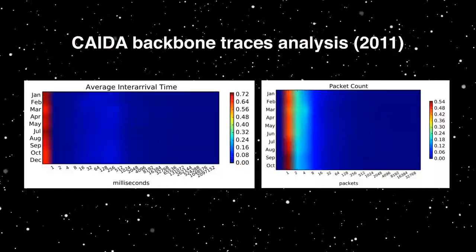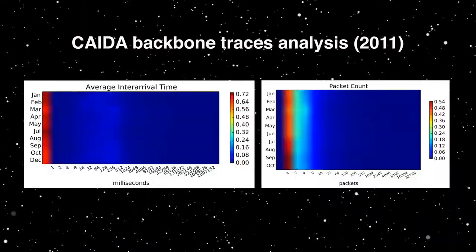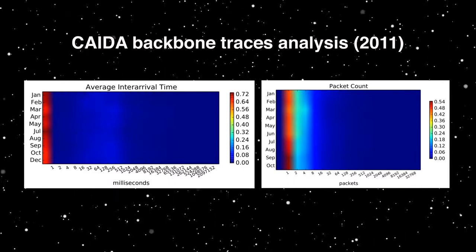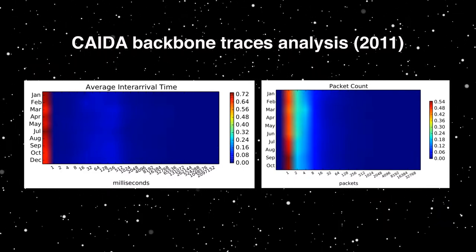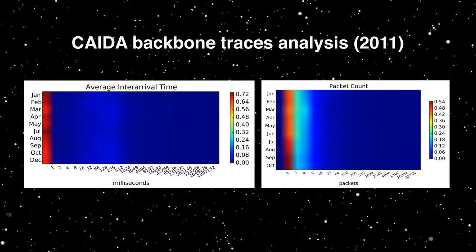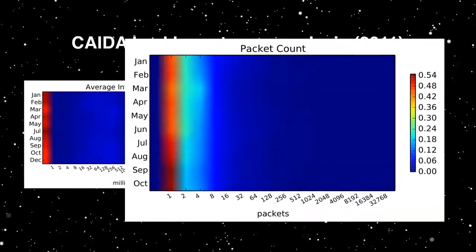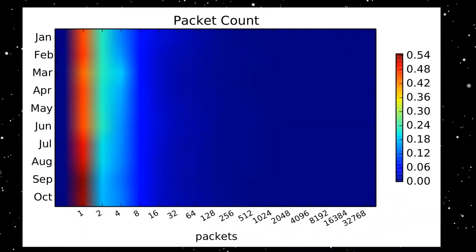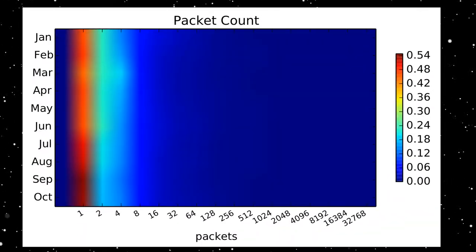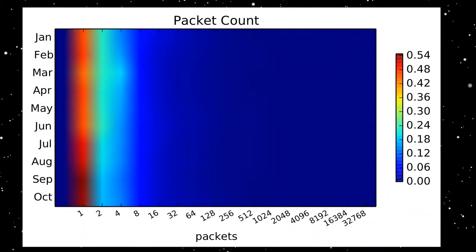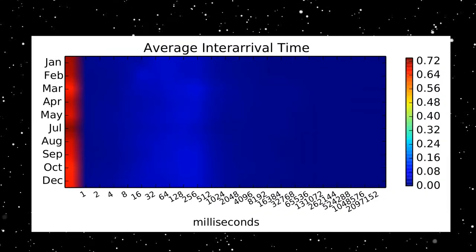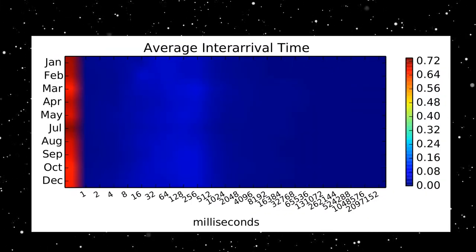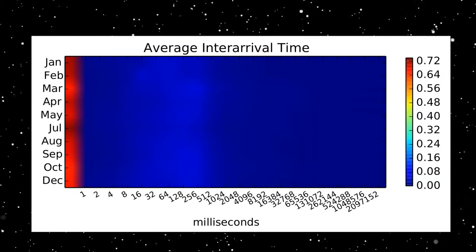Our analysis of backbone traces provided by the Cooperative Association for Internet Data Analysis, which contain a one-hour sample for each month of the year, have shown that the majority of the streams are rather short, while streams with small inter-arrival times dominate.